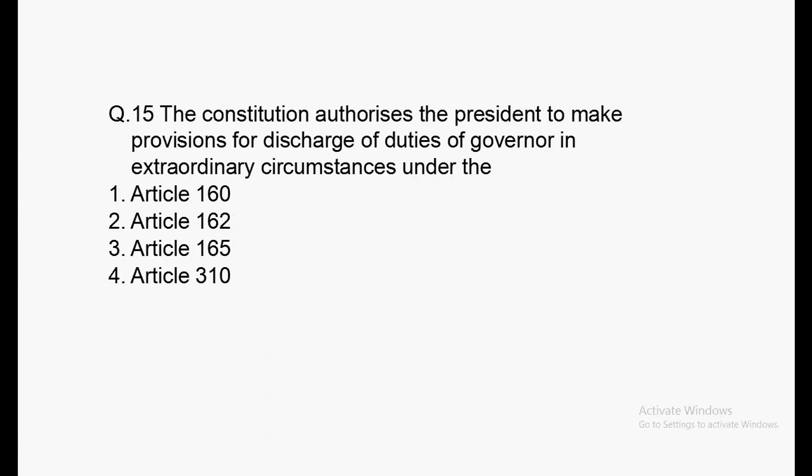Next question: The Constitution authorizes the President to make provision for discharge of duties of the Governor in extraordinary circumstances under which article? Options: Article 161, 162, 165, 310.